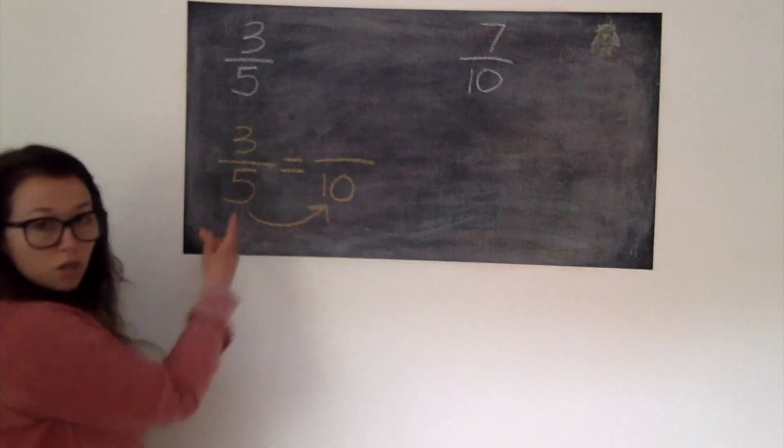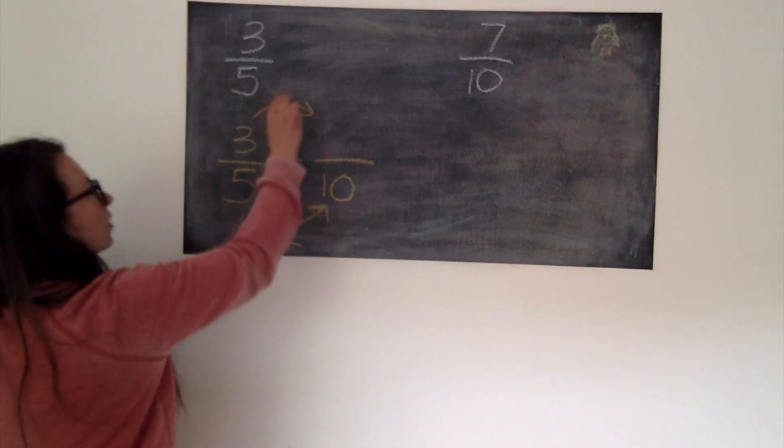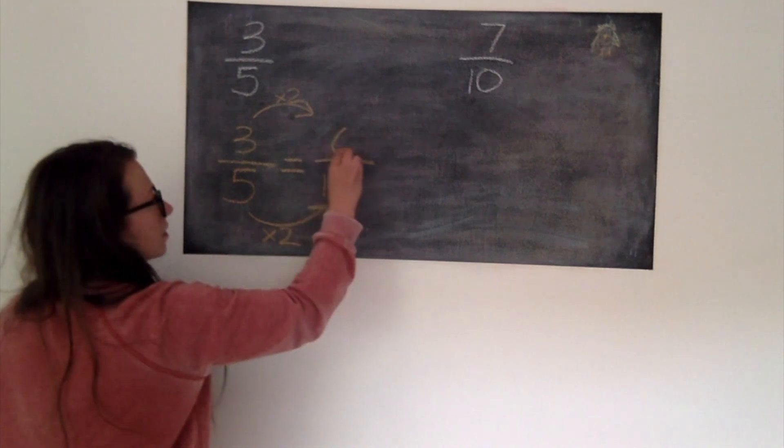We've times our denominator by 2 so we need to do the same to our numerator which gives us 6/10ths.